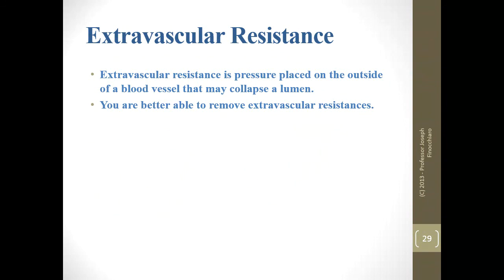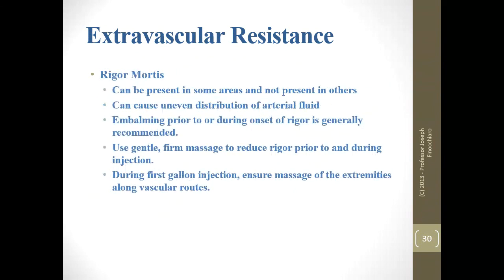Extravascular resistance is pressure placed on the outside of a blood vessel that may collapse the lumen. If there is gas distension in the abdomen pushing down on the abdominal aorta, you can make a cut with a scalpel and insert a trocar — there is a lot you can do to remove extravascular resistances.